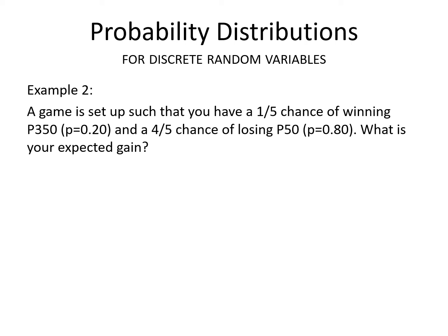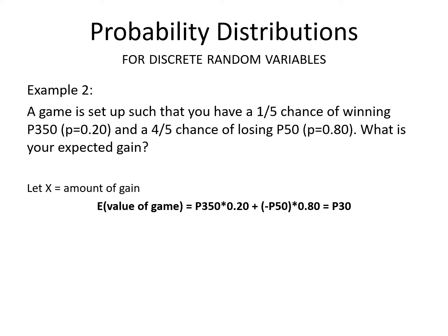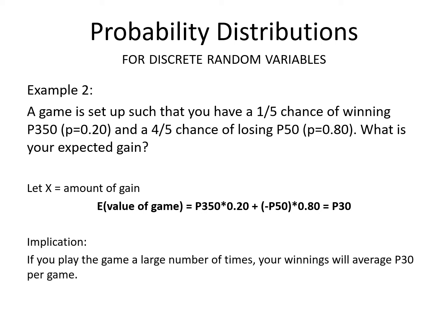In this example, a game is set up such that you have a 1 in 5 chance of winning 350 pesos — probability 0.2 — and a 4 in 5 chance of losing 50 pesos — probability 0.8. So what is your expected gain? Where we let x be the amount of gain, that would be 350 times 0.2, plus negative 50 times 0.8, which equals 30 pesos. This means that if you play the game a large number of times, your winnings will average 30 pesos per game.